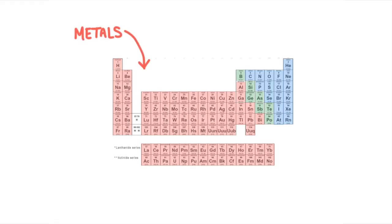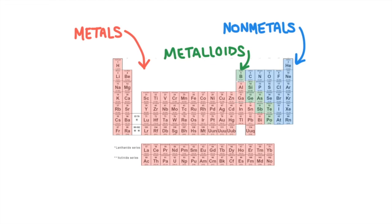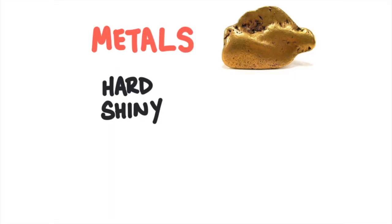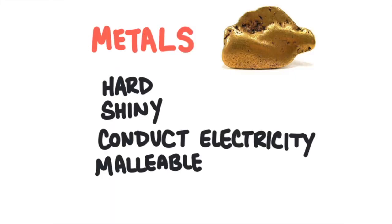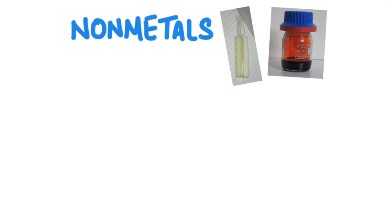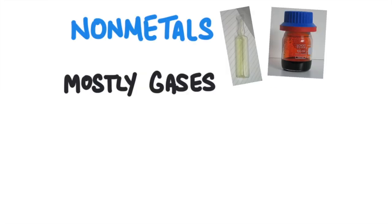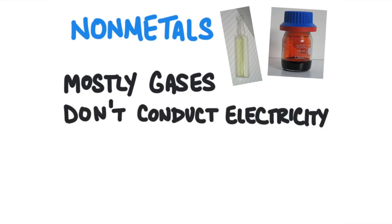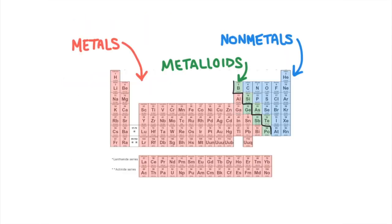The three broad categories are metals, non-metals, and metalloids. Metals are elements on the left side of the stair step. In general they are hard, shiny, they conduct electricity, they are malleable, and ductile. Non-metals are to the right of the stair step. In general their properties are the opposite of metals — they're mostly gases but they can be solid or liquid, they don't conduct electricity, and they are brittle when solid. The stair step isn't a definite border between metals and non-metals. In general, as you move from left to right across the periodic table, elements are going to become less metallic.